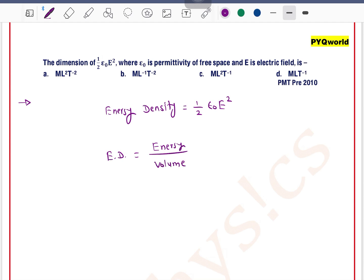So if we solve for half epsilon 0 e square, the dimension of half epsilon 0 e square is equal to dimension of energy divided by dimension of volume.